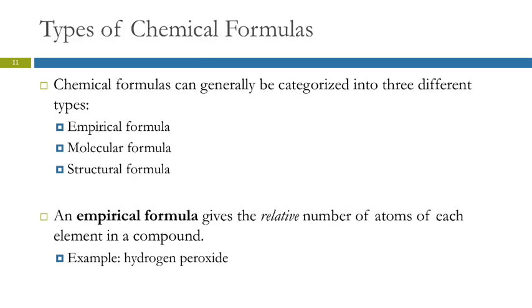There are different kinds of chemical formulas: empirical formulas, molecular formulas, and structural formulas. Empirical is a word that means from experience. An empirical formula is something that's determined experimentally.